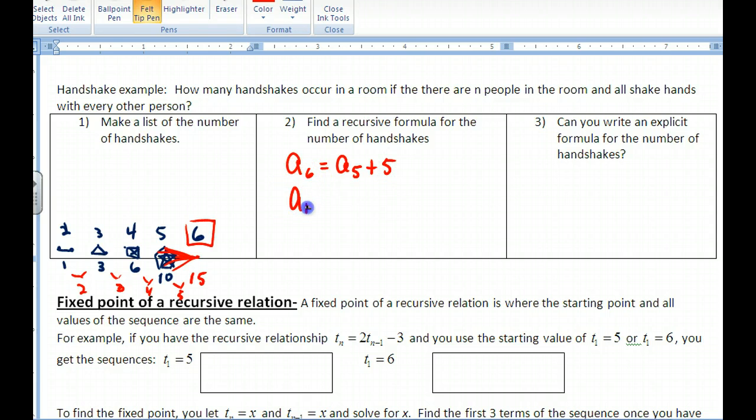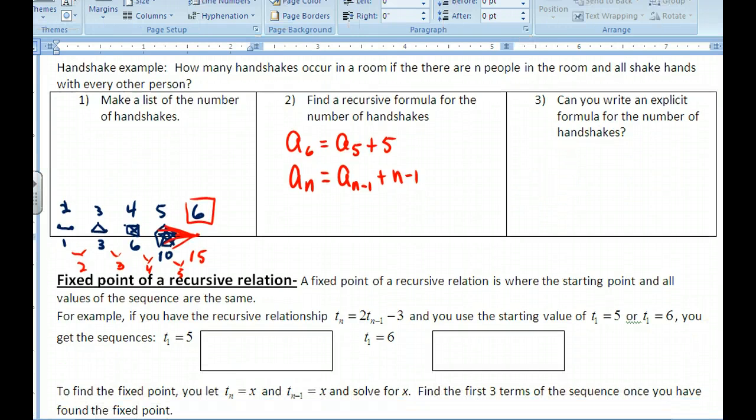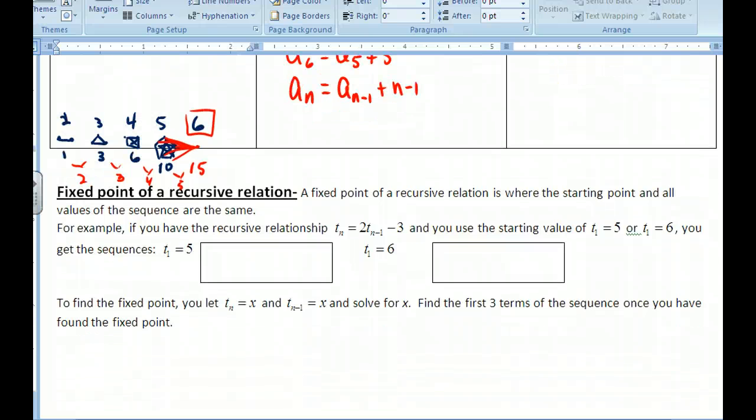So if I do a_n based on this, this would be my previous term, which I write as a_(n-1). And then I'm going to add in n minus 1. This explicit formula, I want you to try this one. I'm not going to show you how to do that. You can figure that one out and then bring it to class. We can talk about it.